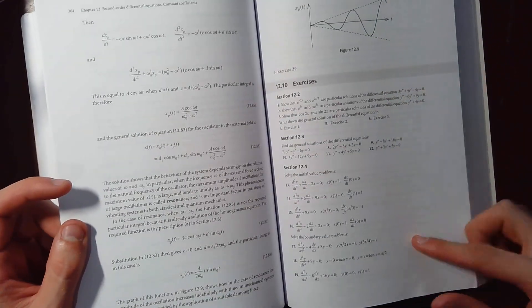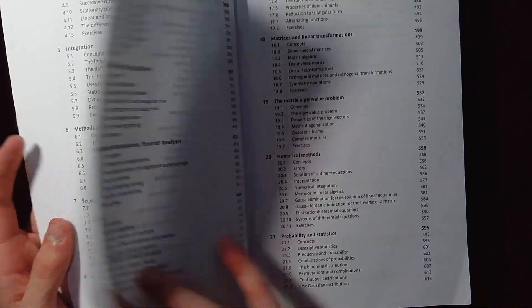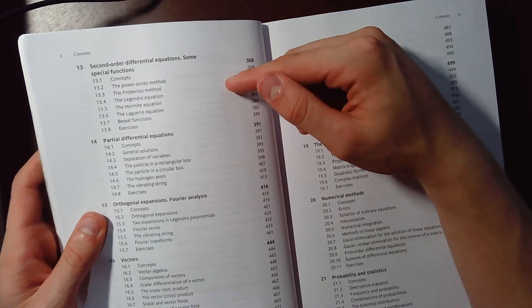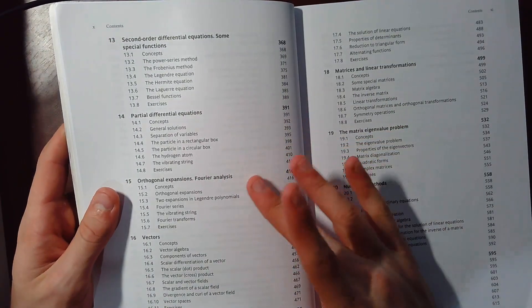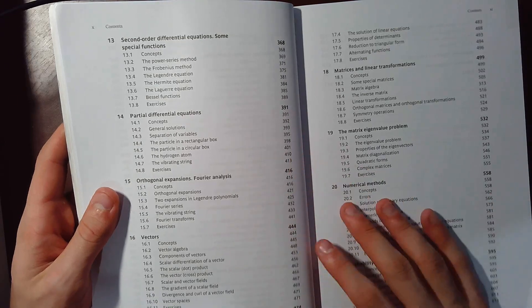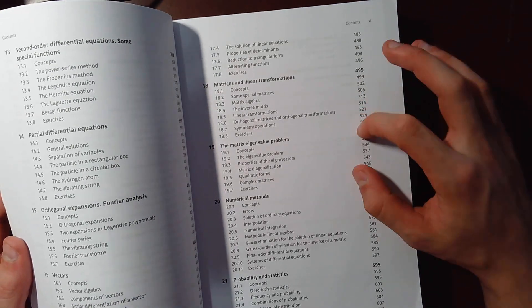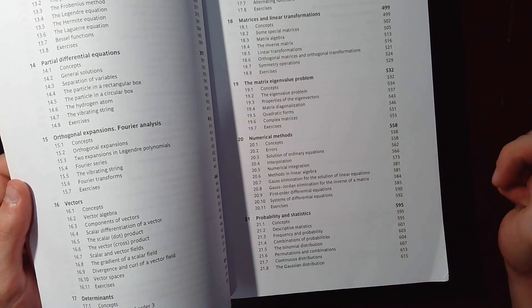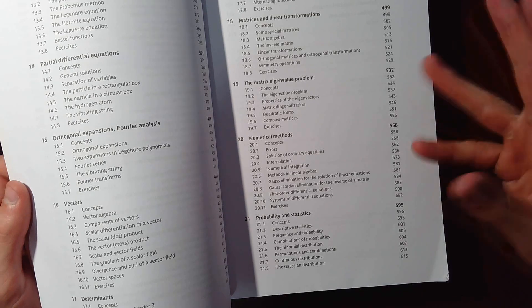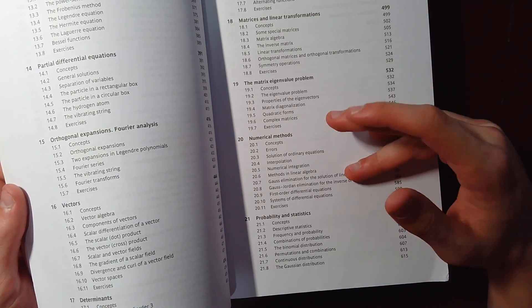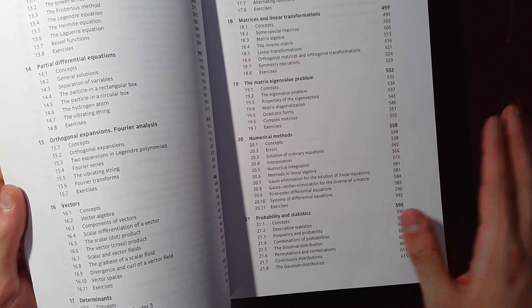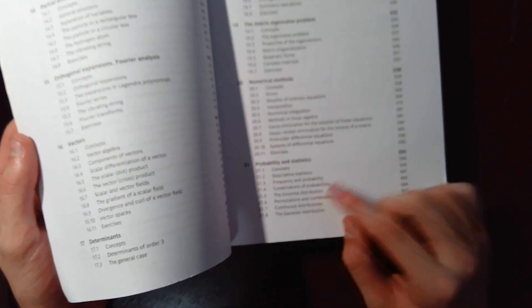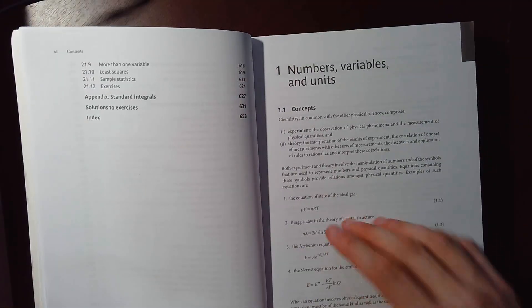Let's go back to the table of contents. So second order differential equations, keeps going. Partial differential equations. Orthogonal expansions, like Fourier analysis. Vectors. Determinants. Matrices and linear transformations. Eigenvalues and the eigenproblem. Then it goes into numerical methods. So methods like you have an integral and you can't integrate that. It's like your Simpson's rule. That's your trapezium rule and your left and right rule. And it even goes into probability and statistics. And that's it.